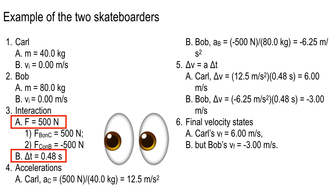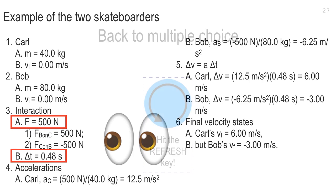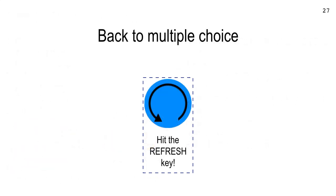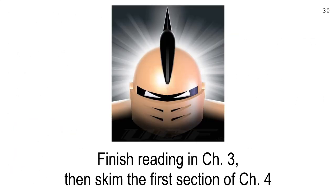Next Thursday I'll ask you some multiple choice questions about this. Go ahead and finish reading Chapter 3 and start reading the first part of Chapter 4 — that's about Bob and Carl. No other homework other than reading. See you on Thursday — you're dismissed.